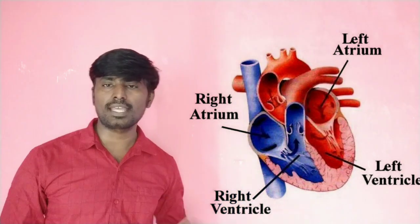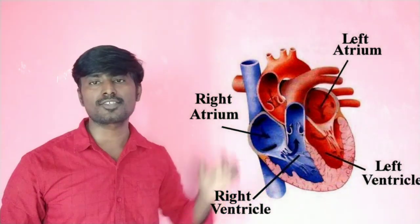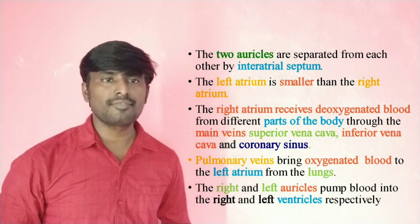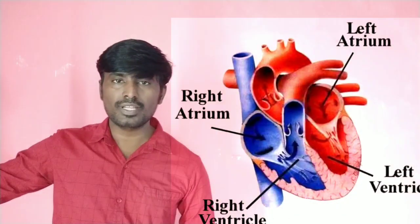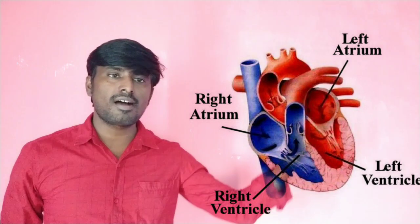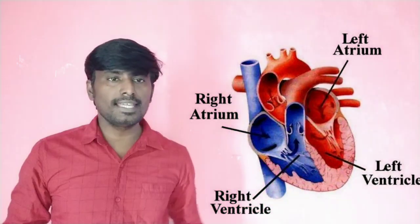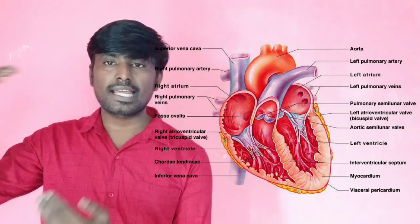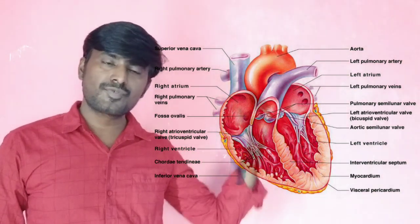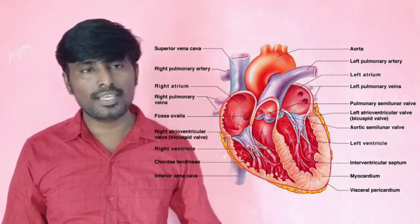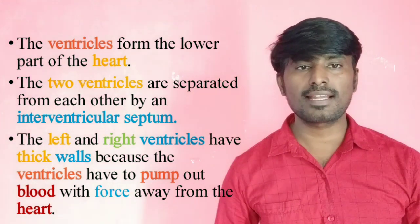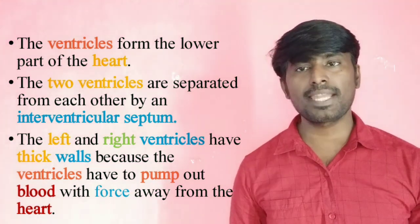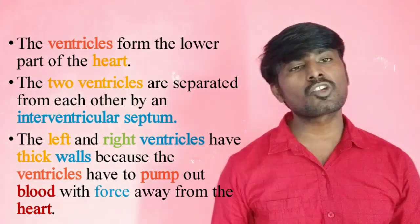The left atrium receives oxygenated blood from the lungs through the four pulmonary veins. The right atrium pumps blood into the right and left ventricles respectively. The two ventricles are separated from each other by the interventricular septum.